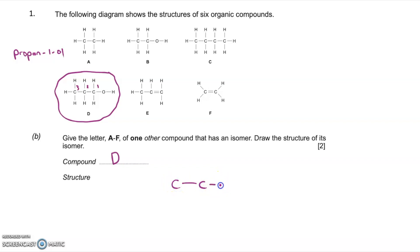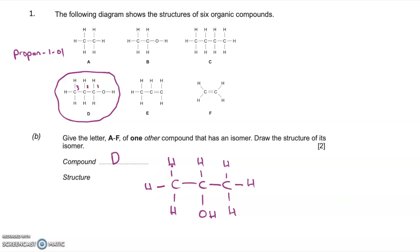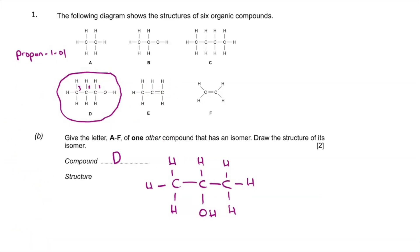When you have an alcohol with three carbons, like compound D, you can move the OH group to a different position, giving a type of isomer called a positional isomer. In compound D the OH group is on carbon one — propan-1-ol. If I put the OH group on the middle carbon, carbon two, that would be propan-2-ol, and that is a positional isomer. There are two marks: one for identifying that compound D has an isomer, and one for drawing the isomer of compound D.